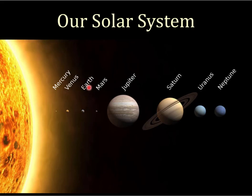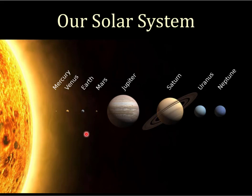All the planets go around the Sun counterclockwise as viewed from above Earth's north pole — the same direction the Sun spins. They're all in a more or less flat plane. Most of them, except Venus and Uranus, are spinning counterclockwise. There's a sort of order to our solar system, and we don't know if that's typical or just the way ours happens to be.